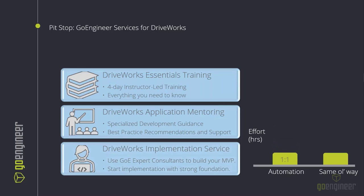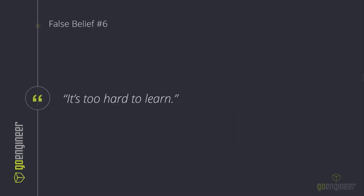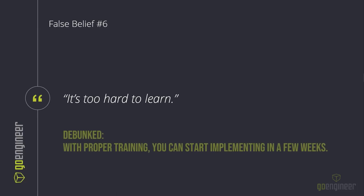This winning formula approximates a 4-to-1 ratio. With implementation services, the effort is mostly on our end, so you can realize even quicker gains. While the 1-to-1 ratio is somewhat theoretical, we're doing most of the work establishing your minimum viable product. You'd still get training and application mentoring, but you can start your implementation with a strong foundation and pick up where we left off. Whether you believe it's too hard to learn or there's not enough time, we've got you covered — with GoEngineer DriveWorks services you can start implementing in just a few weeks.